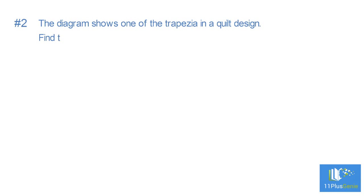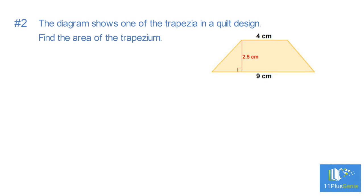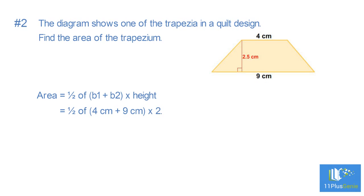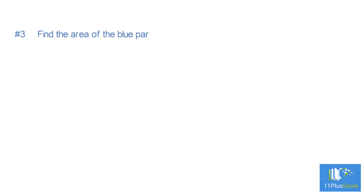Example 2: The diagram shows one of the trapezia in a quilt design. Find the area of the trapezium. Formula: area equals half of (B₁ + B₂) times height, which equals half of (4 cm + 9 cm) times 2.5 cm, which simplifies to 16.25 centimetres squared.